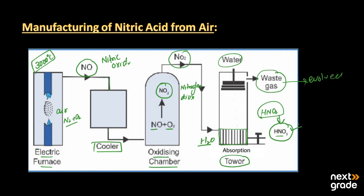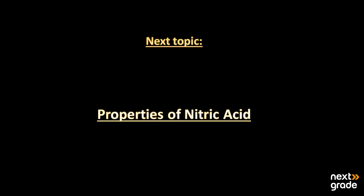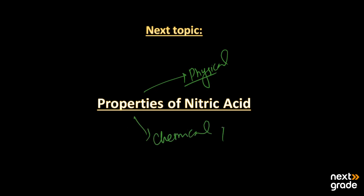That was all about the preparation and manufacturing of nitric acid from air. I hope you understand. If you have any queries, you may ask in the comment section and I will get back to you. In the next section, we will learn about the physical and chemical properties of nitric acid. Keep learning and have a good day.